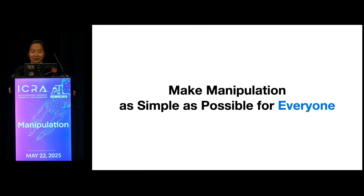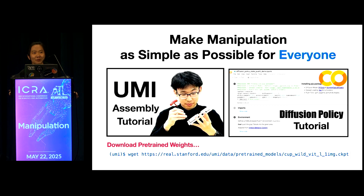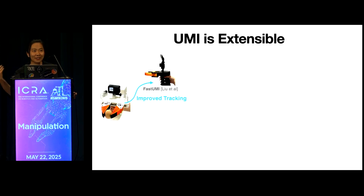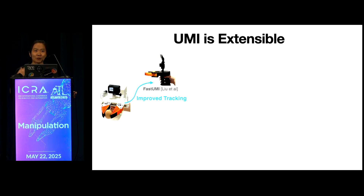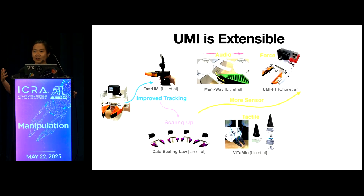As part of our effort to make manipulation as simple as possible for everyone, we try to open-source everything — including the hardware design, the algorithms, and very detailed tutorials so you can reproduce the system. We also make UMI very extensible so everyone can build on top of it. Since we released UMI about one to two years ago, we have already seen many follow-up works, for example improving tracking accuracy, scaling up data collection, and adding new sensor modalities like audio, force, and tactile data.